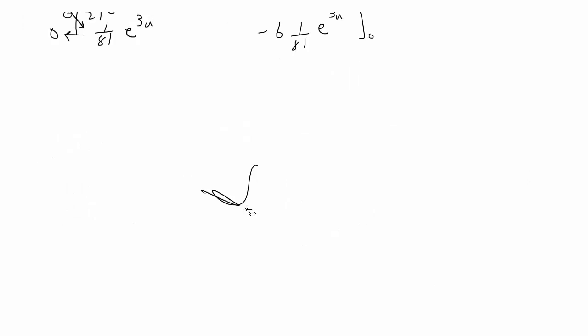But anyway, the next step I did was just simplify. So I just rewrote it as 1/3 u^3 e^(3u) minus 1/3 u^2 e^(3u) plus 2/9 u e^(3u) minus 2/27 e^(3u), still going from 0 to t. And we're basically just simplifying. Actually the next thing I did was just plug in t.